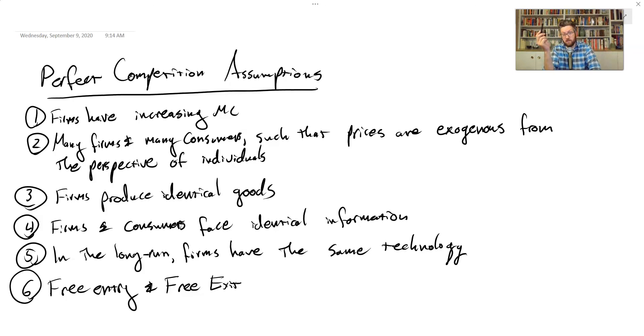And essentially, we're saying that there's no legal or whatever impediment to doing that. If it's profitable to enter, firms can enter. If it's not profitable to stay in the market, they can leave. And if we have all these six assumptions, we can use our perfect competition model. Before we jump straight into it, though, we need to zero in on one aspect of cost for firms that we have so far neglected, which is average cost.